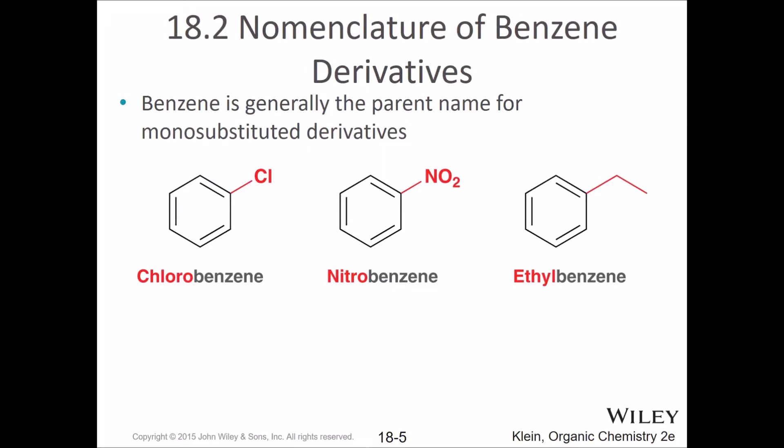These chapters are typically structured in the following manner: you get a new functional group — which in chapter 18 is benzene or aromatic rings — and then we name them. We talk about their structure in section 3, and then in section 4 and following we talk about the reactions: how do we make them and what do we do with them. So, nomenclature of benzene derivatives — let's go.